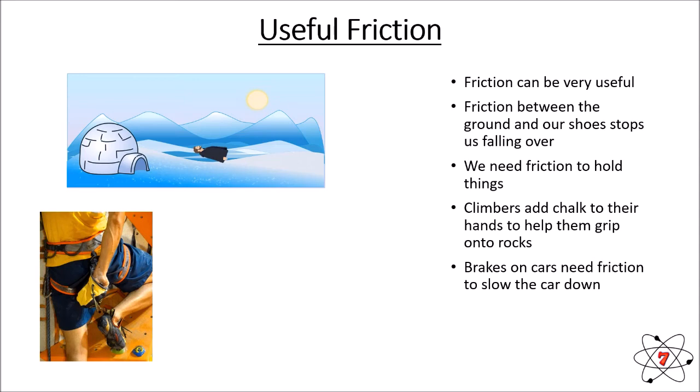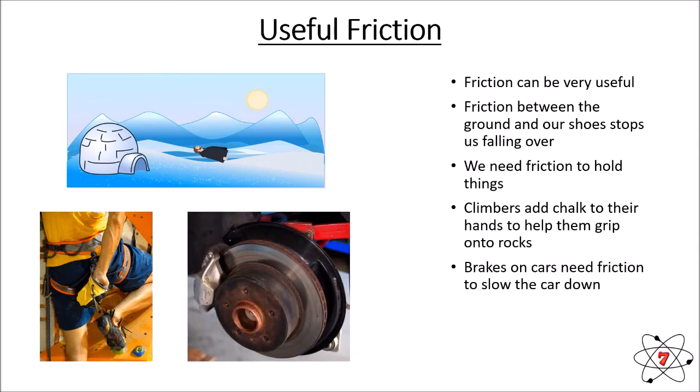The brakes on our cars also need friction to slow the car down. We have a rough surface on the brake pad and a rough surface on the brake caliper — these push against each other and create friction to slow the car. Without friction, applying the brakes would not stop the wheel spinning and we would not slow down.